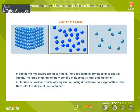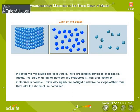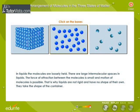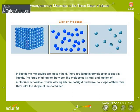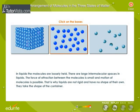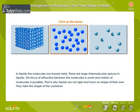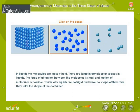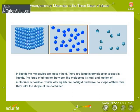Observe that in liquids the molecules are loosely held. There are large intermolecular spaces in liquids. The force of attraction between the molecules is small and movement of molecules is possible. That is why liquids are not rigid and have no shape of their own. They take the shape of the container.